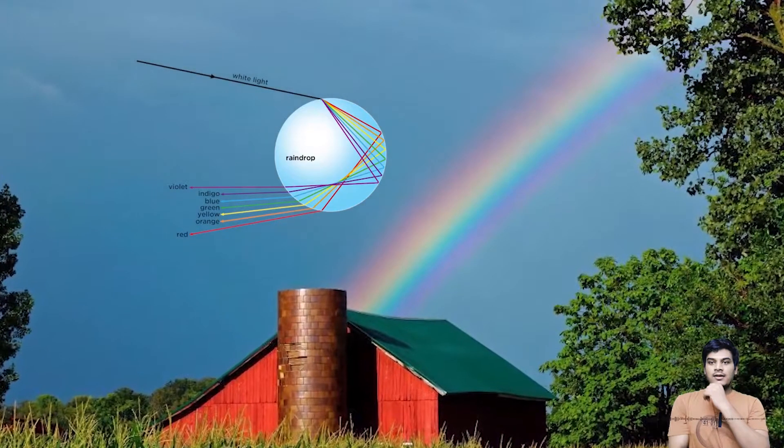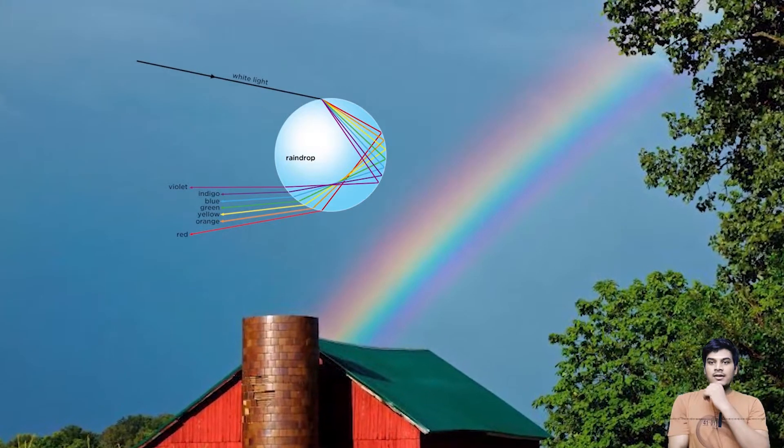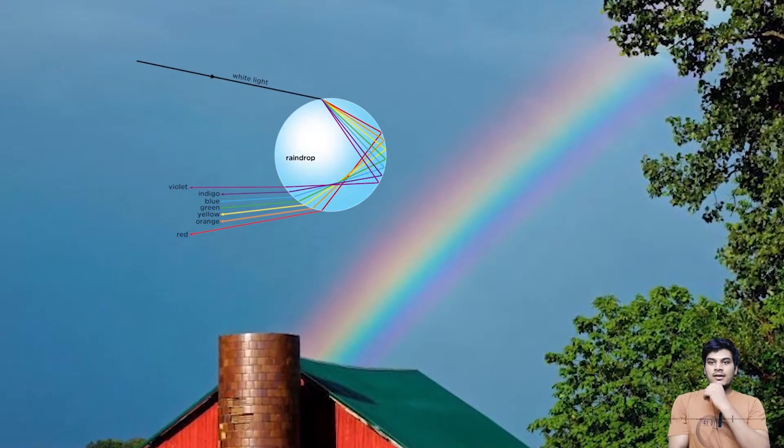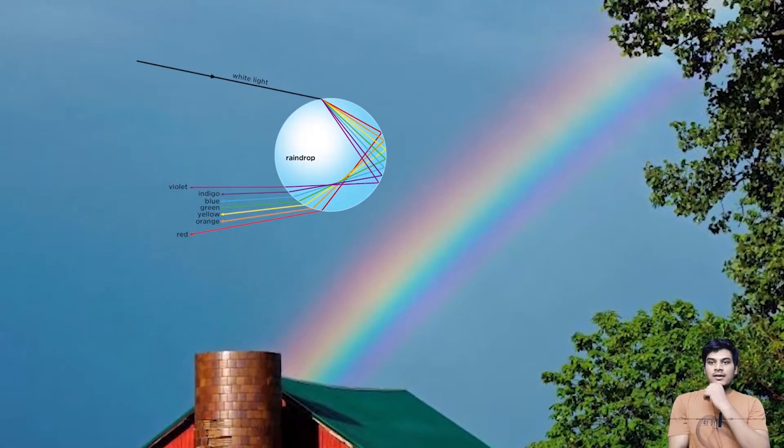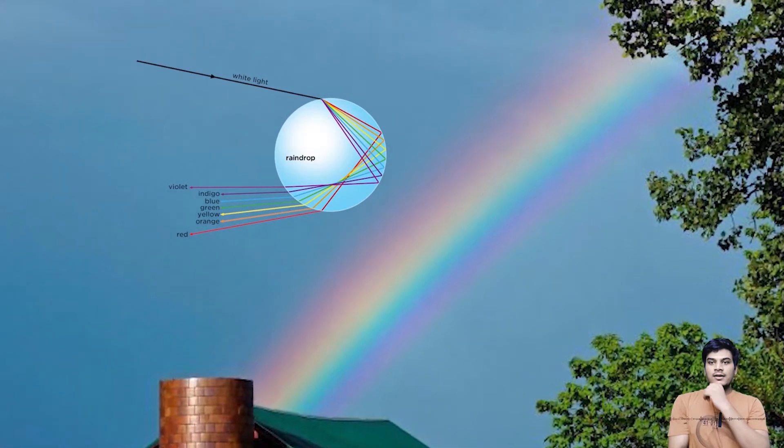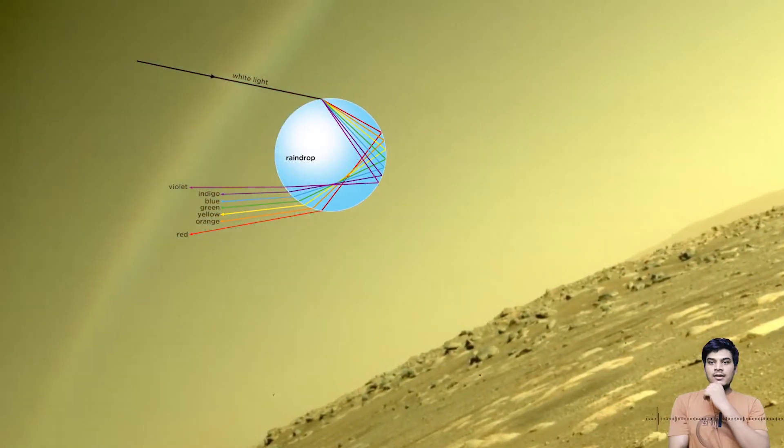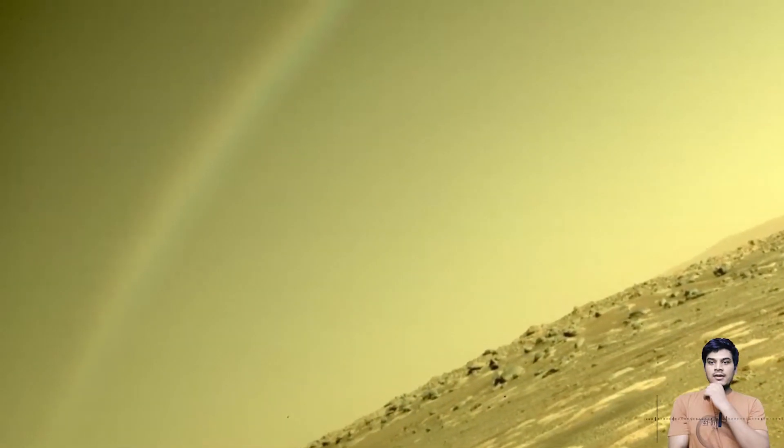If you talk about an actual rainbow on Earth, there is going to be dispersion of light, and a droplet of water is a must — the white light gets dispersed into seven colors and finally we see a rainbow. Right now there is no evidence that there is water on Mars, so it is difficult to get a rainbow on Mars. And even if there were water, we still can't see any rainbow because the atmosphere of Mars is so cold, making it very difficult for liquid to stay in liquid form.